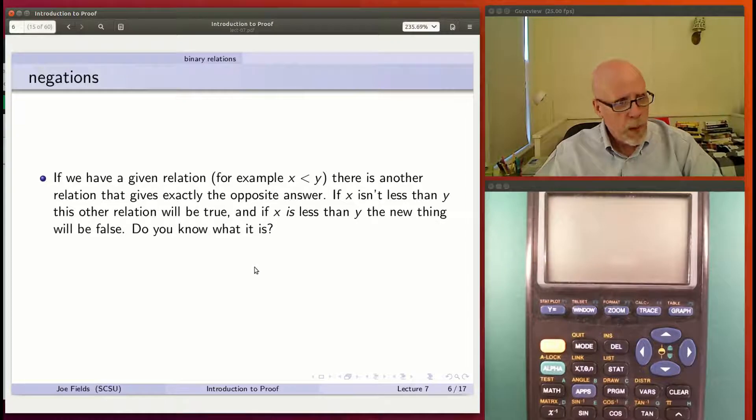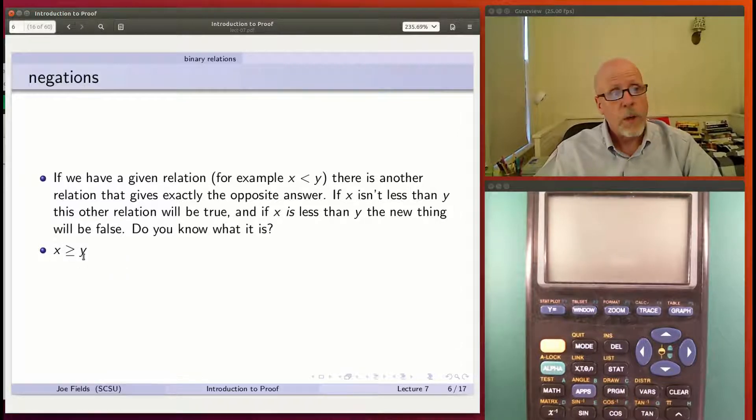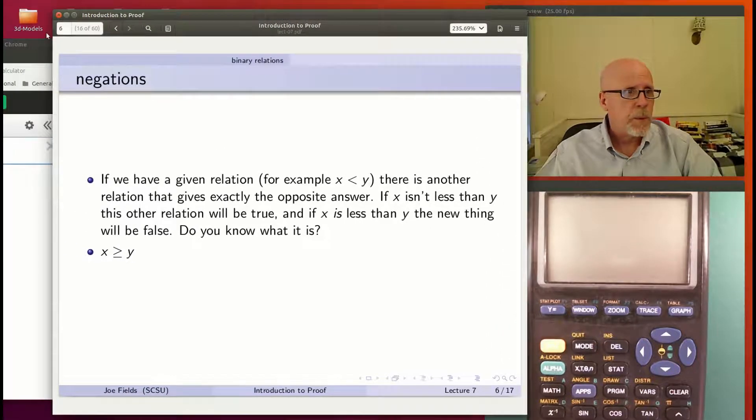If you have a given relation, for example, the one we just used, x less than y, there is another relation that gives exactly the opposite answer. If x is less than y, then it says false. If x isn't less than y, it says true. You know what that is? It takes exactly the opposite truth values of the less than sign. You probably do know what this is. That's the greater than or equal to sign. Notice it's greater than or equal to, not just greater than. What would the graph of that look like?